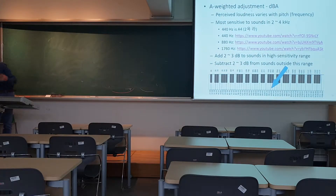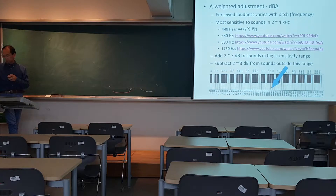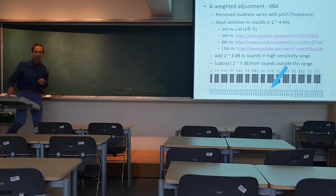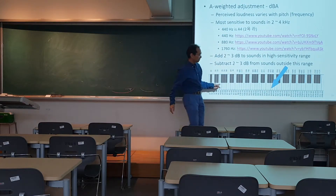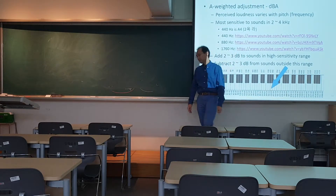A-weighting depends on the frequency of the sound, because people perceive it differently. What A-weighting does is give more weight to sounds within the frequency range that makes people more annoyed — that is 2 to 4 kilohertz. We can hear starting from the reference of 440 hertz, officially called A4, which is the note in the middle of the piano. It's a solfège 'La' sound.